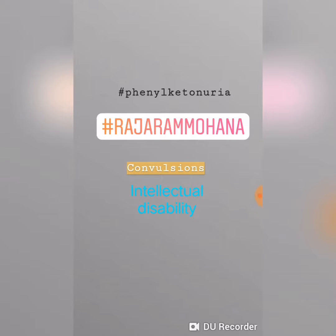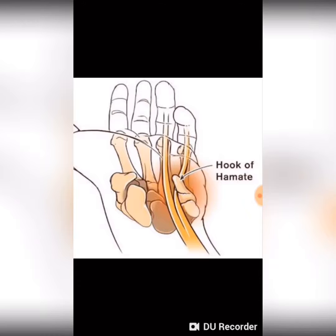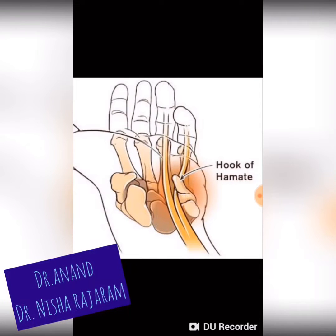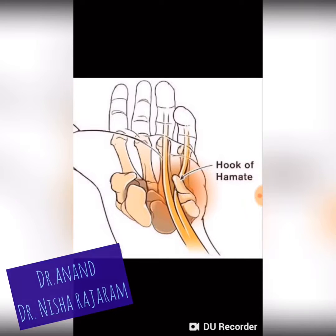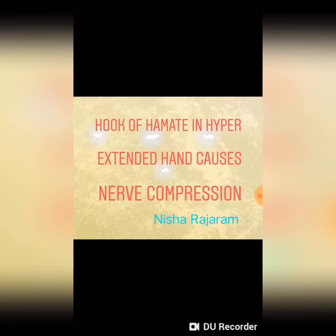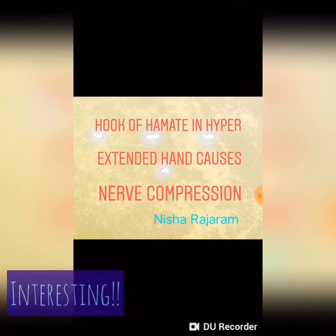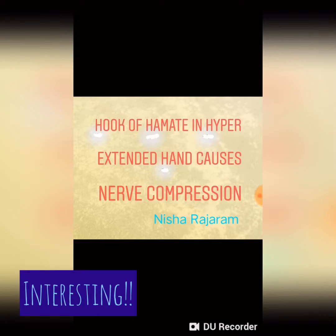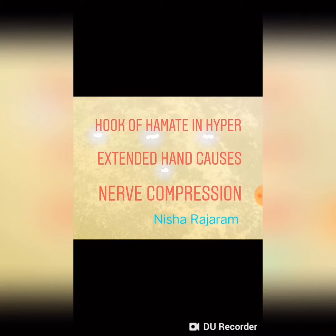Coming to the next question: hook of hamate — we can see the carpal bone in a hyper-extended hand. What is the result? Hook of hamate in a hyper-extended hand causes nerve compression. You can remember this by the letter H: H for hook, H for hamate, H for hyper-extension of hand — four H's.